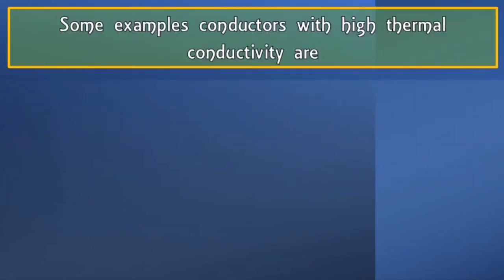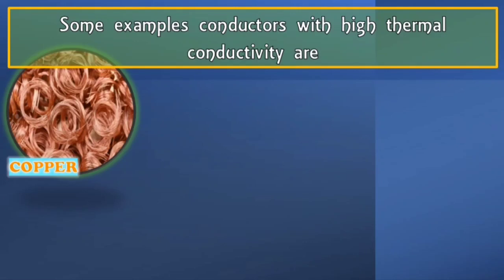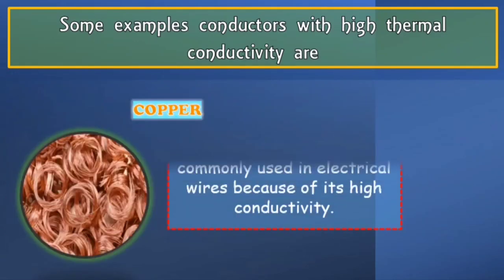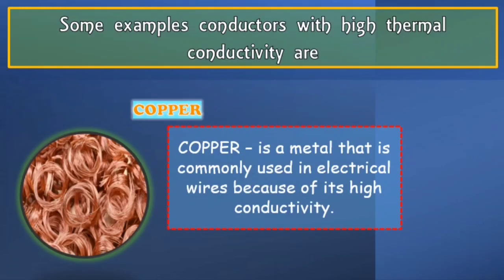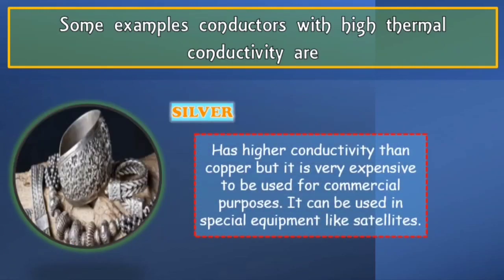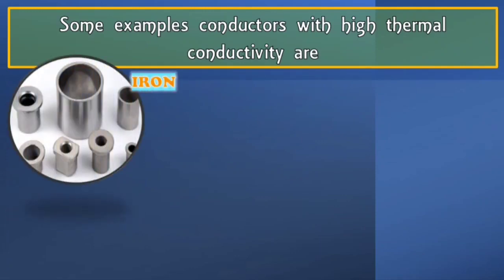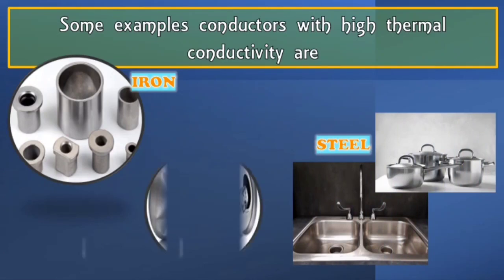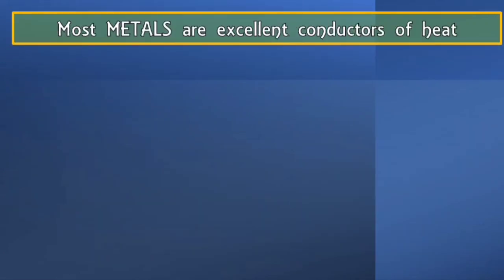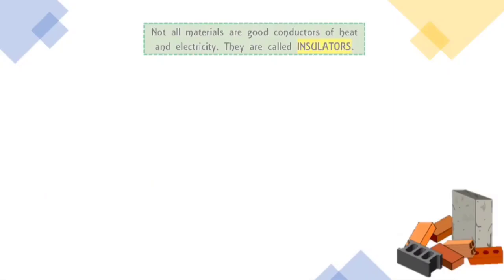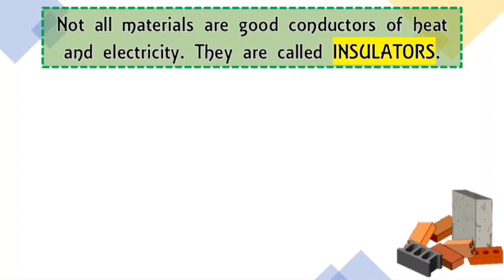Some examples of conductors with high thermal conductivity are copper, silver, and gold. Copper is a metal commonly used in electrical wires because of its high conductivity. Silver has higher conductivity than copper, but it is very expensive to be used for commercial purposes — it can be used in special equipment like satellites. Other examples of conductors with high thermal conductivity include iron, steel, aluminum, nickel, brass, and water.